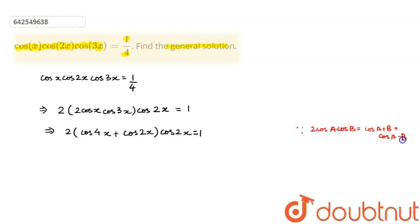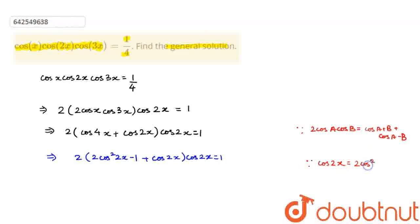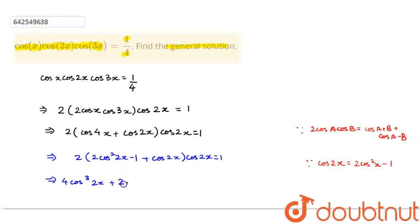This implies 2 into (2cos²2x − 1 + cos 2x) into cos 2x is equal to 1, since the formula of cos 4x is 2cos²2x − 1. On further simplifying, I get 4cos³2x + 2cos²2x − 2cos 2x − 1 is equal to 0.